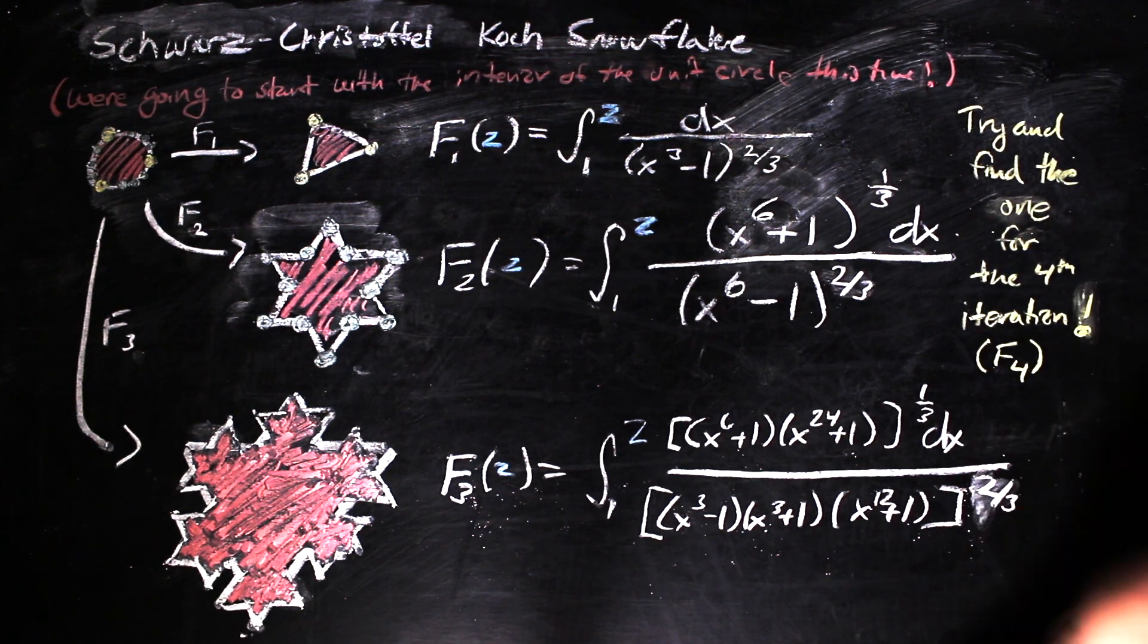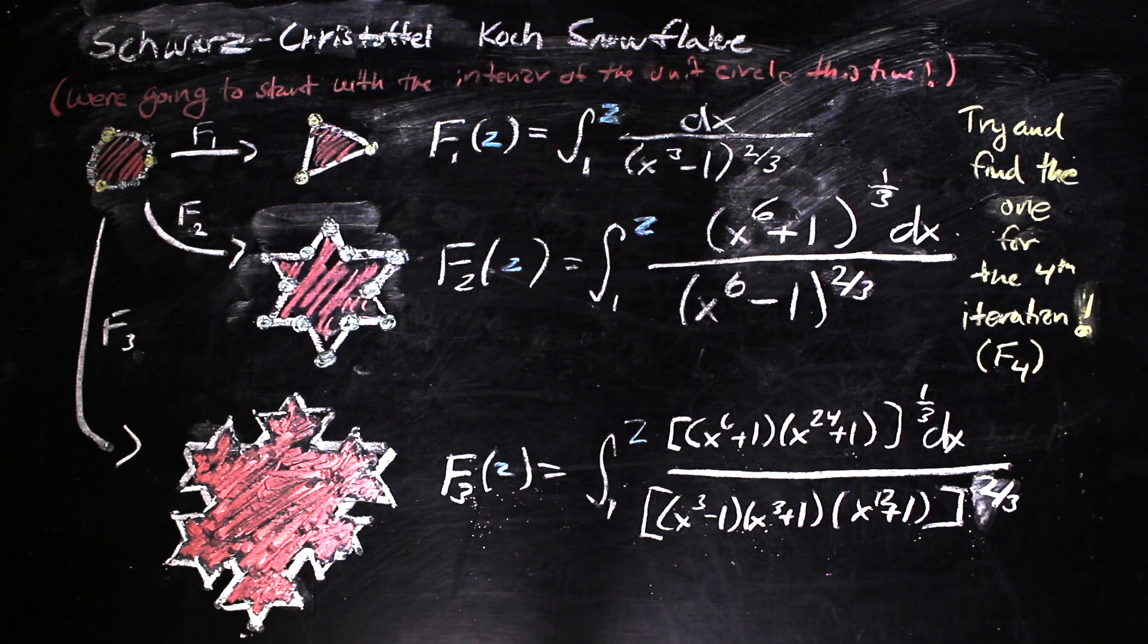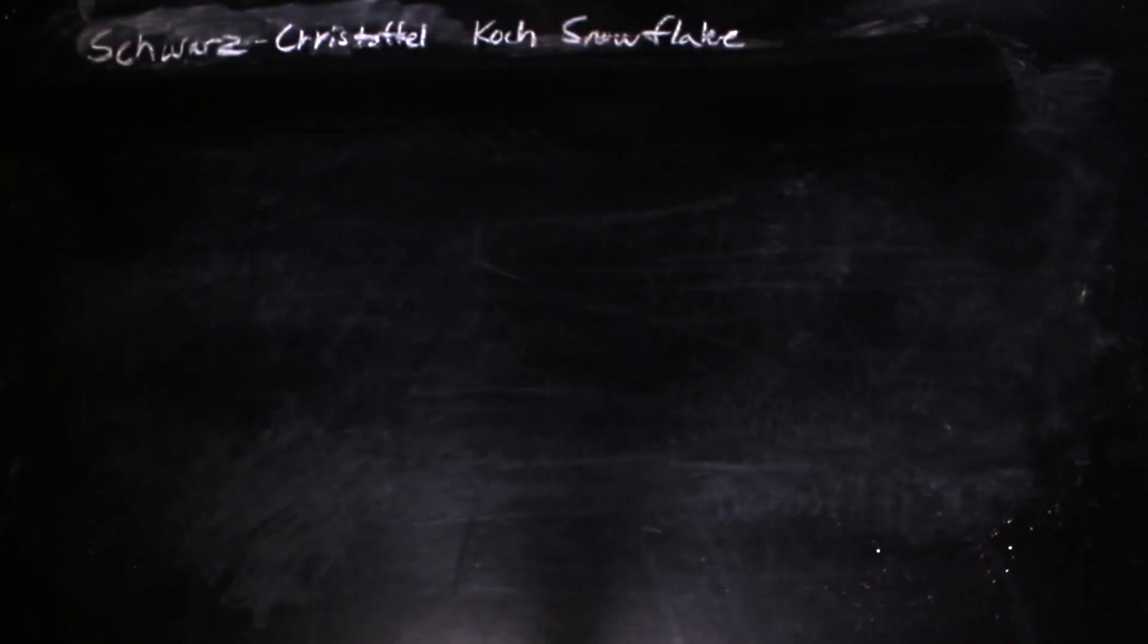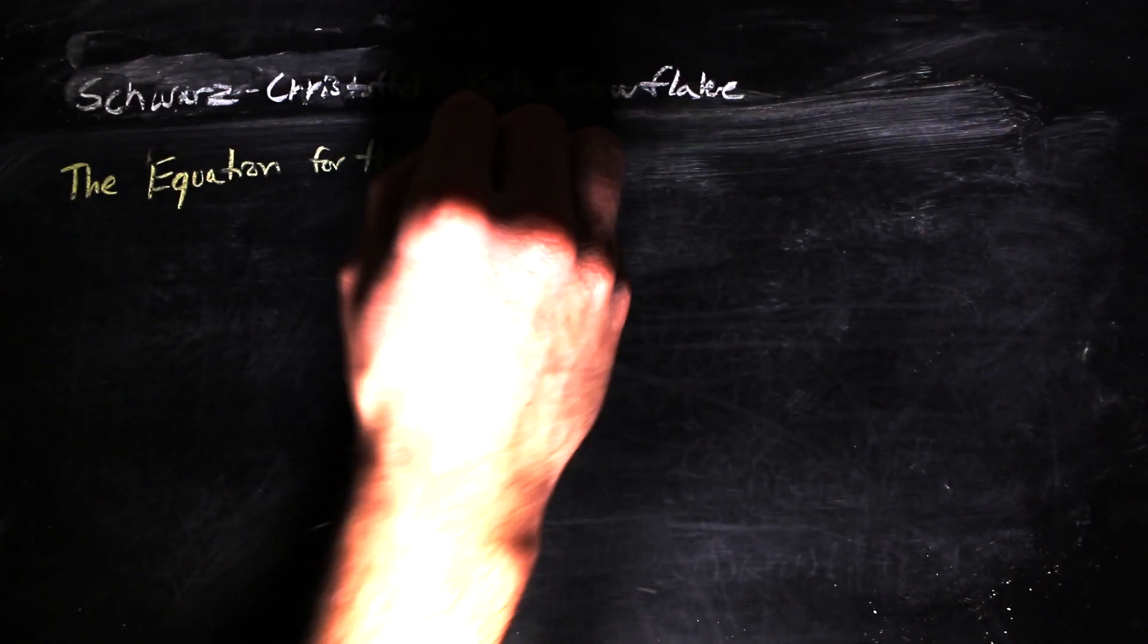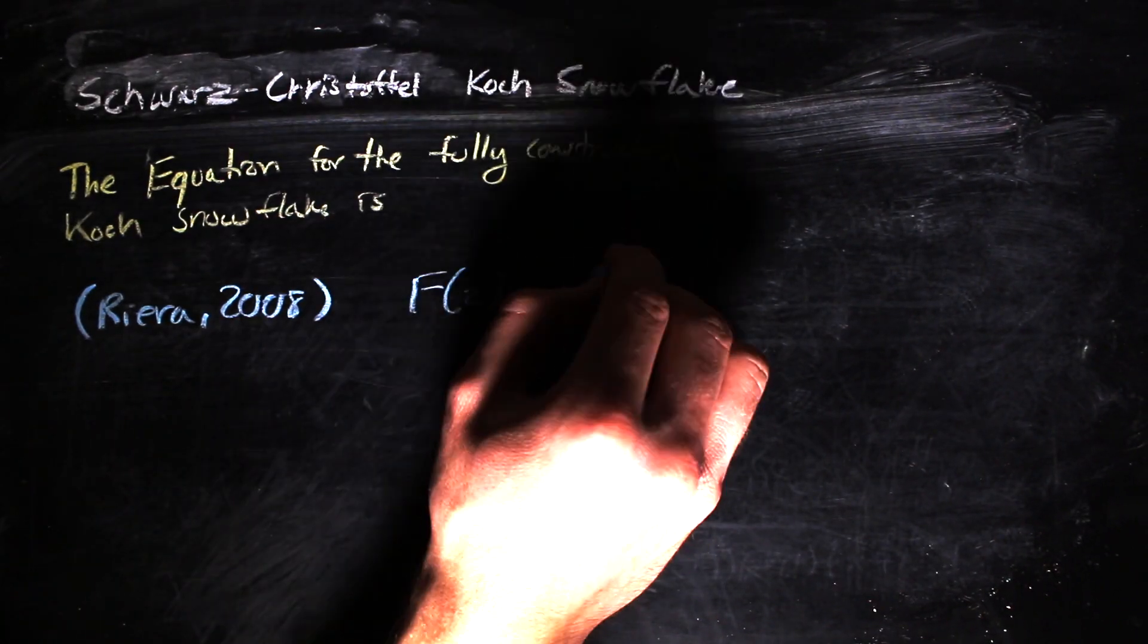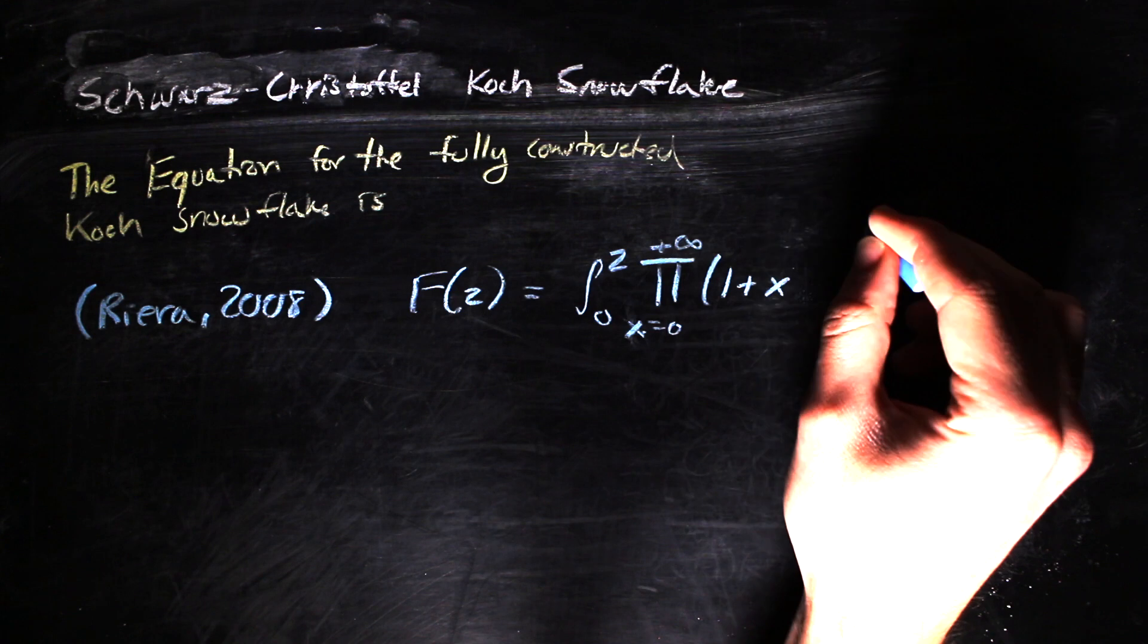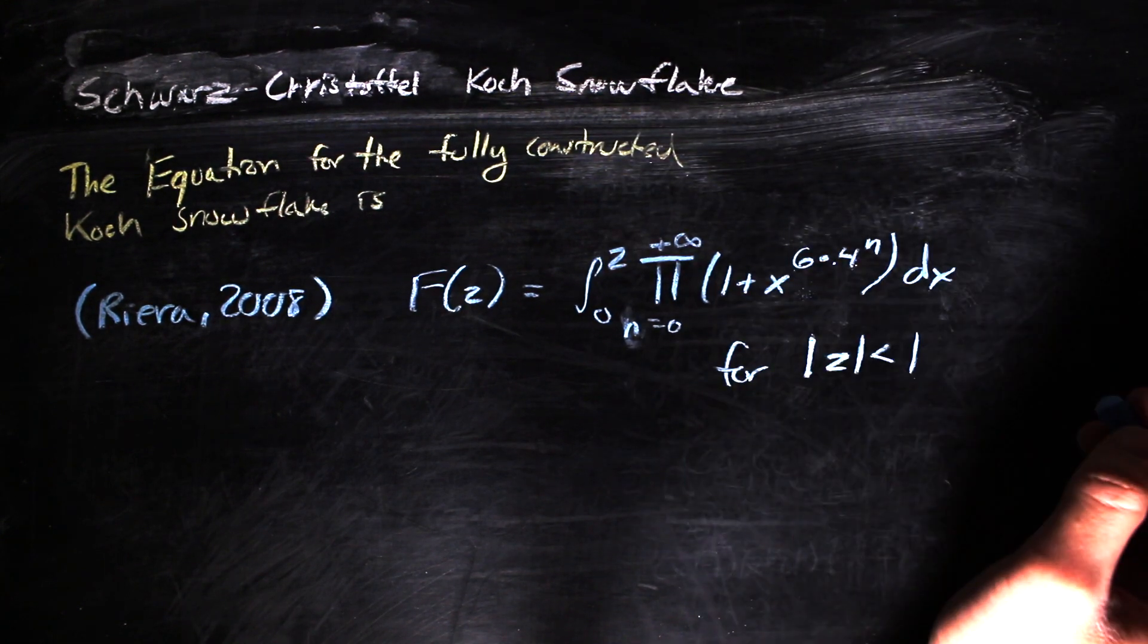Now would be a good time to stop before we state the mapping for the fully constructed Koch snowflake. I've linked Riera's paper down below if you're interested in the explicit construction of these maps.